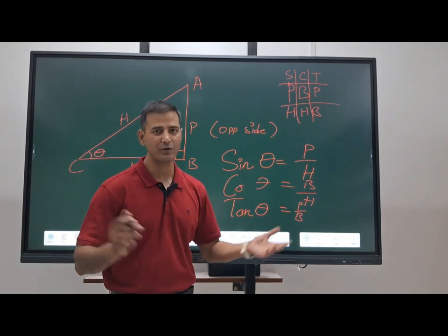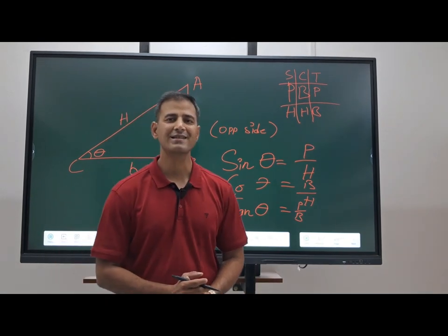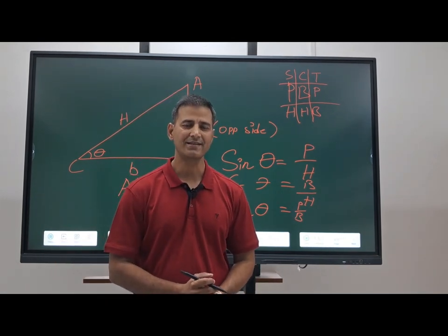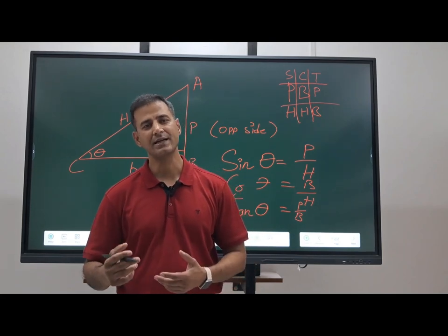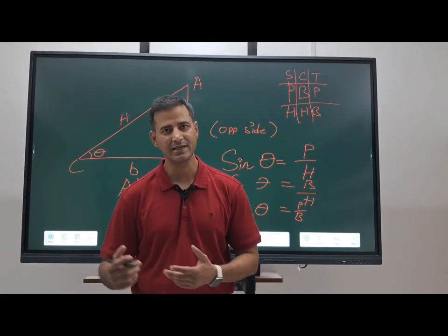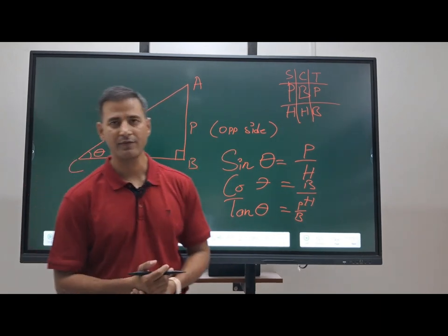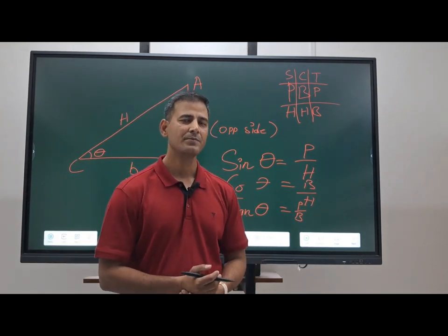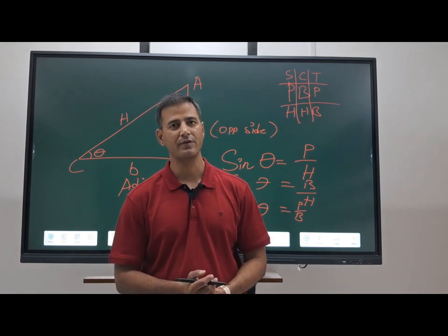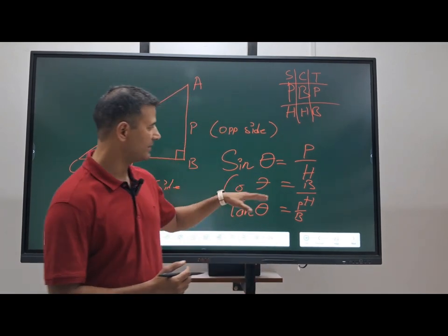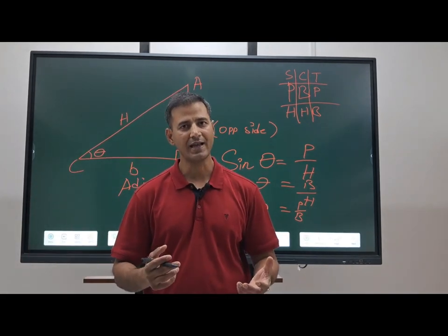Similarly, we can find the reciprocal ratios: cosec theta, sec theta, and cot theta. Cosec theta is the reciprocal of sin theta, sec theta is the reciprocal of cos theta, and cot theta is the reciprocal of tan theta.